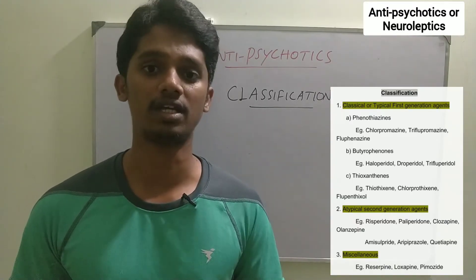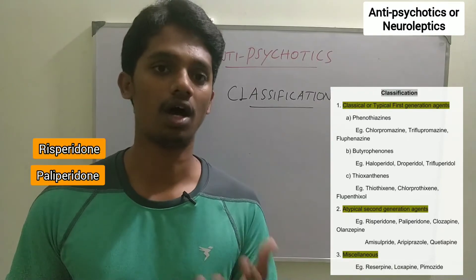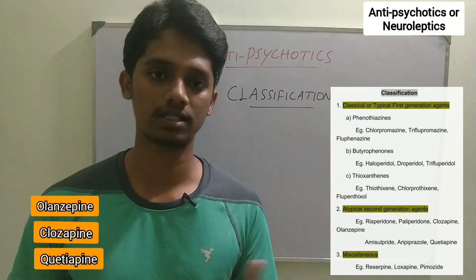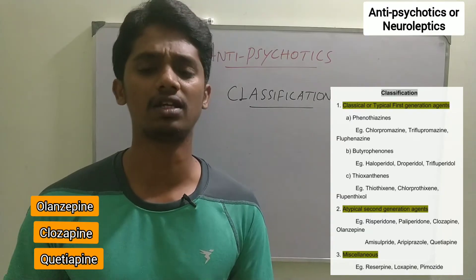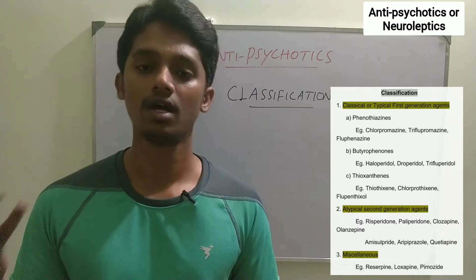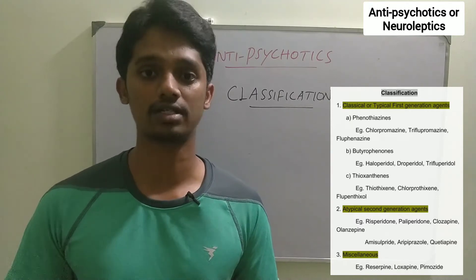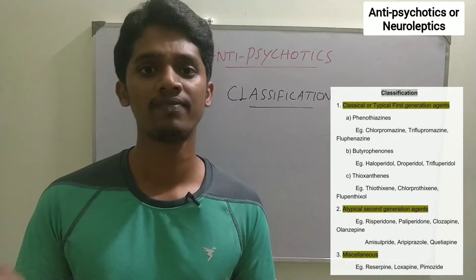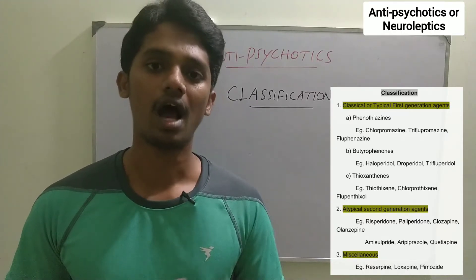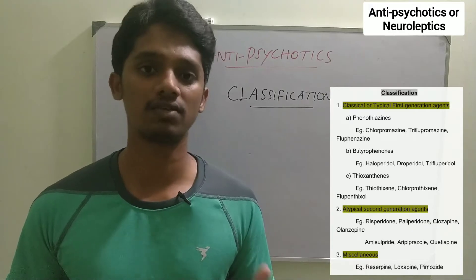This D2 antagonism is a major difference between first generation and second generation. In the second generation, there are drugs like Risperidone, Paliperidone, Olanzapine, Clozapine, and Quetiapine. In this case, there are multiple action sites — dopamine receptor antagonism is not the only mechanism. They also act on serotonergic and noradrenergic receptors. That's why they are called atypical neuroleptics.